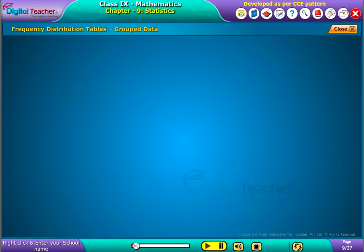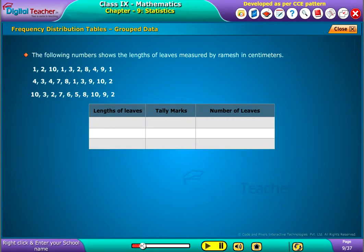Now let us construct the frequency distribution table for grouped data. To represent the data in categories, we make groups as per the requirement, and these groups are called class intervals. Let us consider the lengths of leaves between one centimeter to three centimeters. We observe that there are thirteen leaves, so the tally marks are drawn as shown.